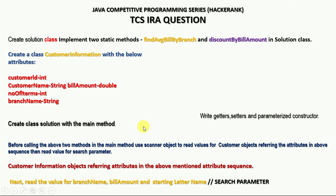In this video we are going to discuss a Java question which has been asked in TCS IRA. This video is very important if you want to prepare for your upcoming OPA, IRA, and PRA. We need to create a Solution class and a CustomerInformation class with attributes: customer ID (int), customer name (String), bill amount (double), number of items (int), and branch name (String).